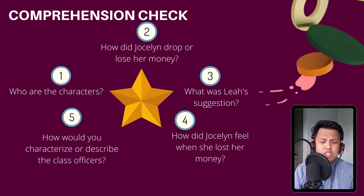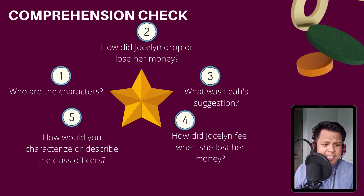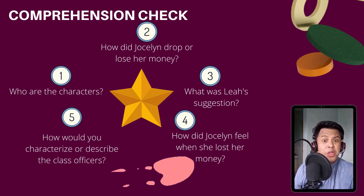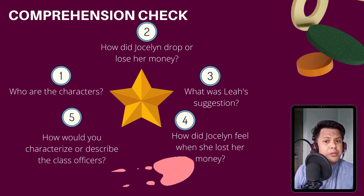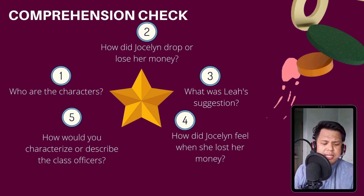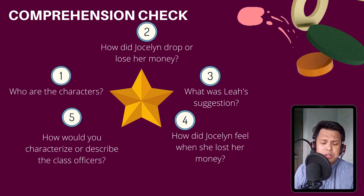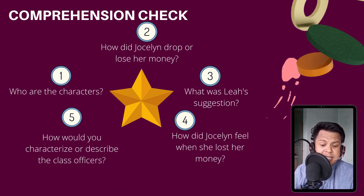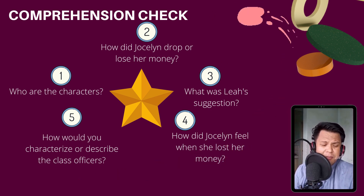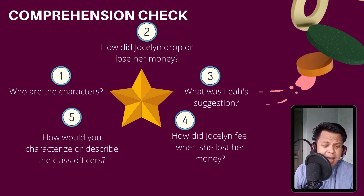For question number three: what was Leah's suggestion? She suggested retracing their steps. For number four: how did Jocelyn feel when she lost her money? Correct — she felt sad and lonely.